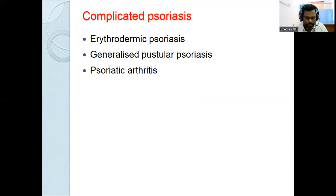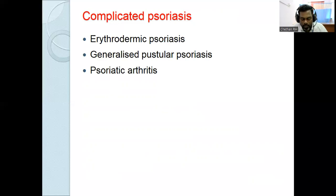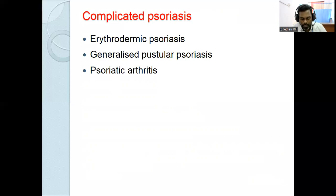CASPAR criteria for psoriatic arthritis: current psoriasis (2 points), personal history of psoriasis (1 point), psoriasis in first or second degree relative (1 point), nail psoriasis (1 point), rheumatoid factor negative (1 point), current dactylitis (1 point), history of dactylitis (1 point), radiological evidence of juxtaarticular new bone formation (1 point). A score of more than 3 points indicates psoriatic arthritis.